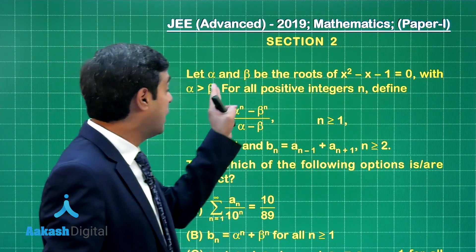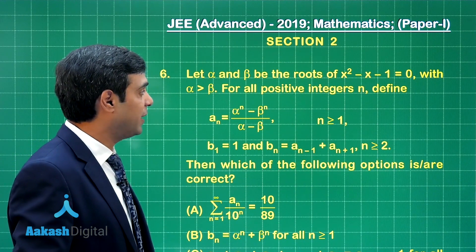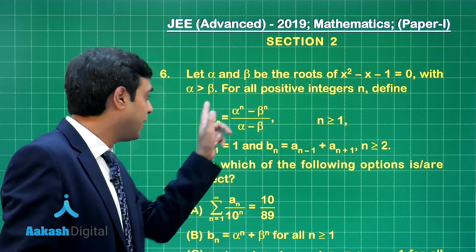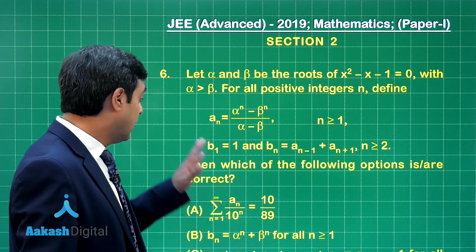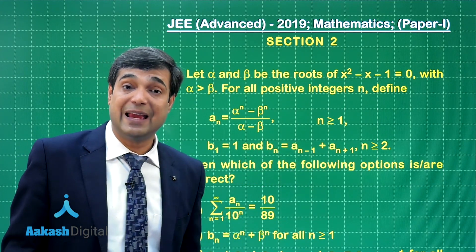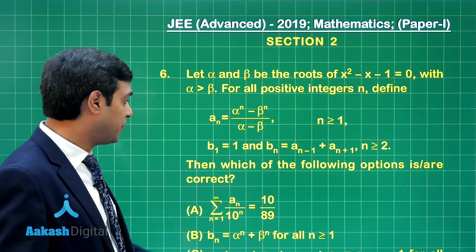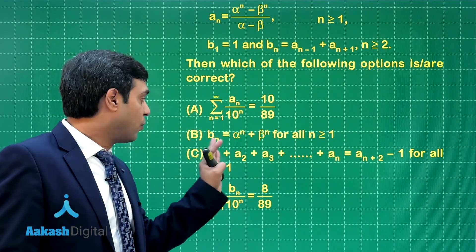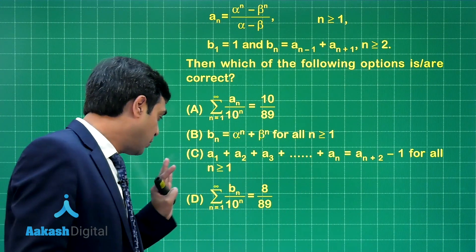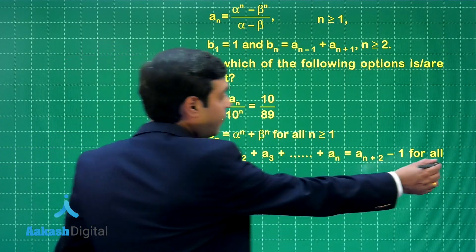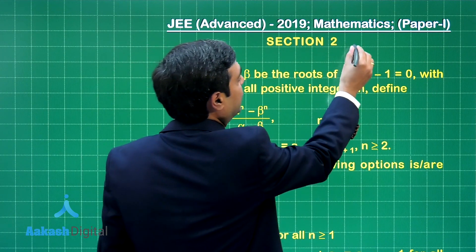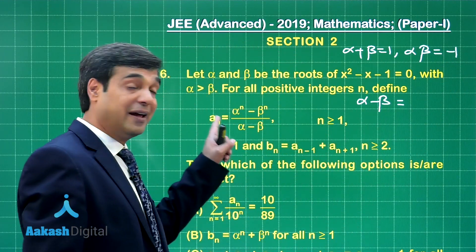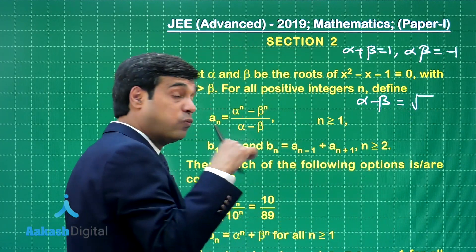Moving to question number 6 of section 2. Let alpha and beta be the roots of the quadratic equation x squared minus x minus 1 equals 0, with alpha greater than beta, and n a positive integer. For all positive integers, a_n equals alpha^n minus beta^n upon alpha minus beta, with B1 equals 1. B_n equals a_{n-1} plus a_{n+1} for n greater than or equal to 2. The sum alpha plus beta is 1, alpha beta is minus 1, and alpha minus beta equals square root of 5.